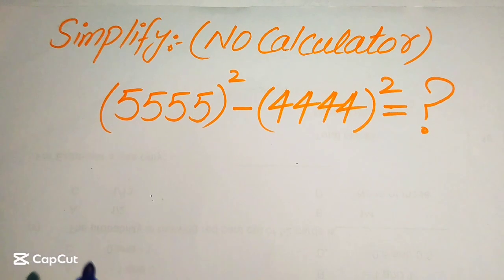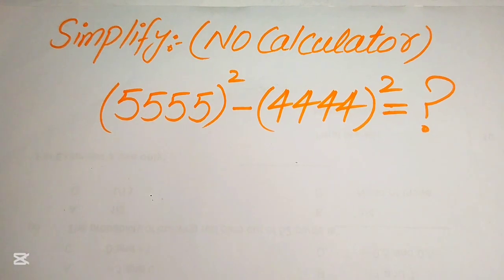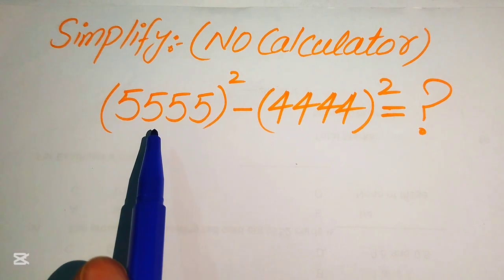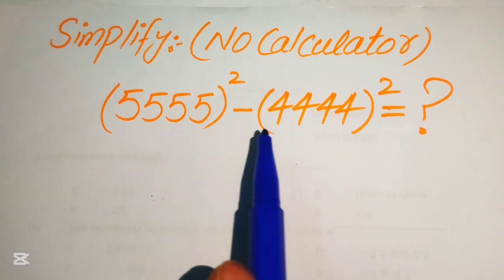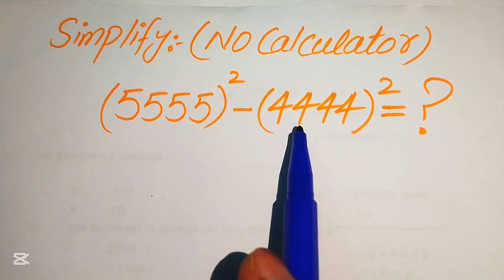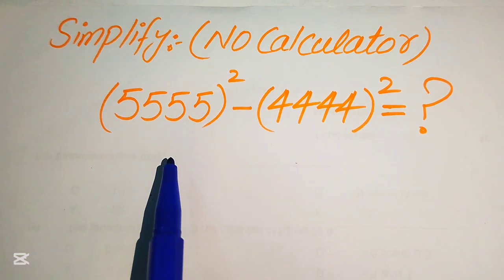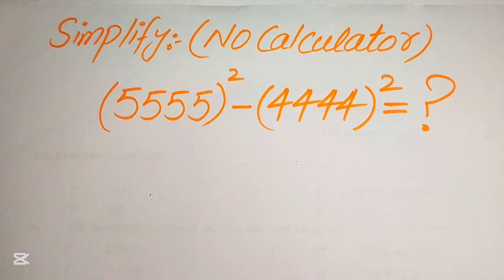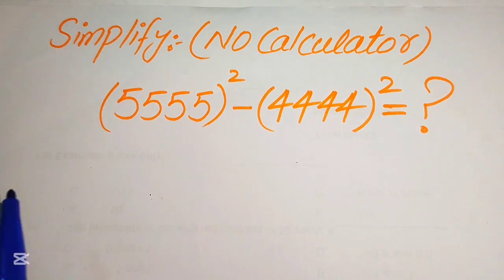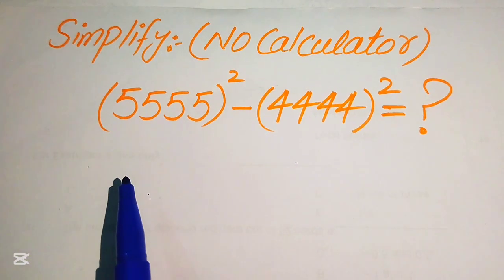How to simplify this algebraic expression without using a calculator: 5555 squared minus 4444 squared. We write this algebraic expression into simplified form, showing all of the working on paper.